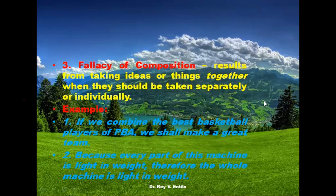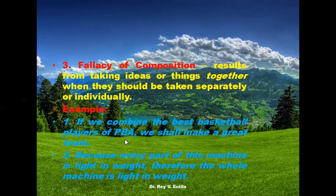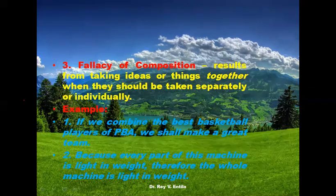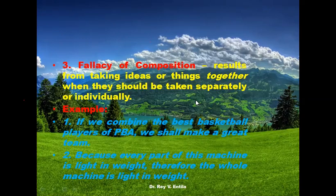The fallacy of composition results from taking ideas or things together when they should be taken separately or individually. For example: 'If we combine the best basketball players of the PBA, we shall make a great team.' Not necessarily — if all the best players are forwards with no center and no guards, it is still not a great team. Or: 'Because every part of this machine is light in weight, the whole machine is light in weight.' Of course the nuts and bolts may be light, but the whole machine can be very heavy. Know the difference between the individual parts and the whole.